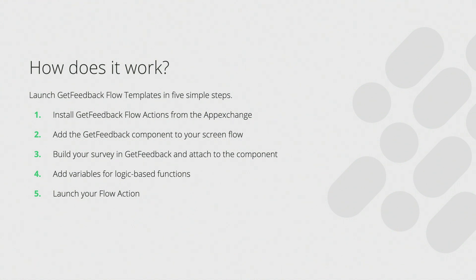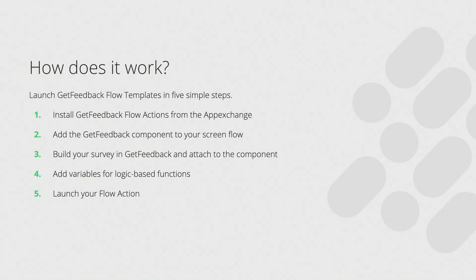You simply plug in the survey ID that you built in Get Feedback prior to that. You can add variables to your Flow action component — things like inserting metadata. What do we know about this customer to drive a skip logic pathway through that survey? Create a contextual experience that the employee addressing that particular business need can follow through a predetermined pathway based on what we already know about that customer. Once it's all good to go, all you have to do is launch your Flow just like you normally would, and it's off to the races.